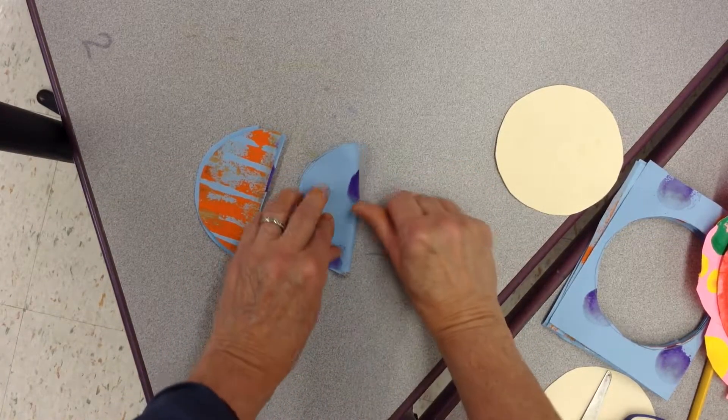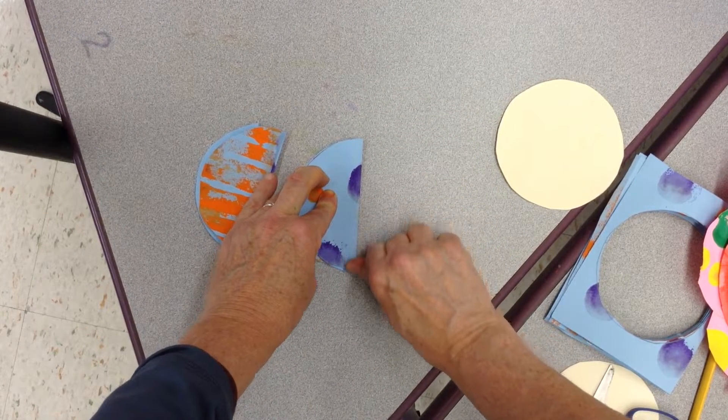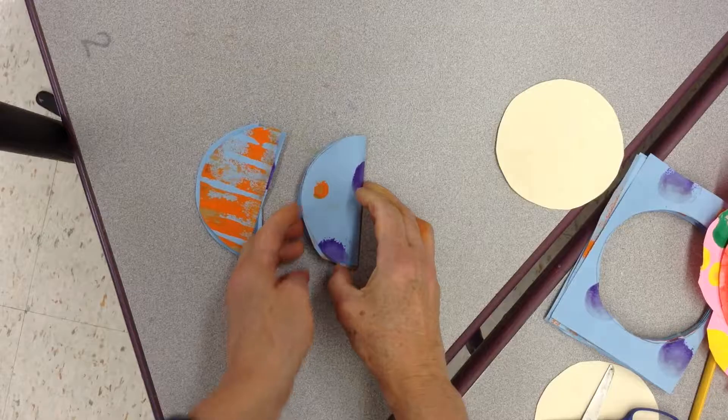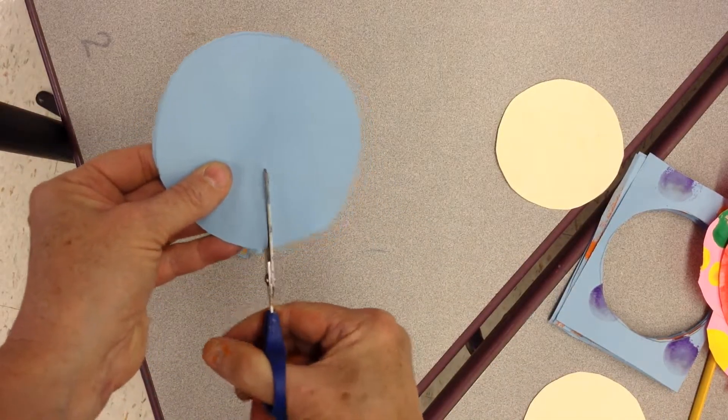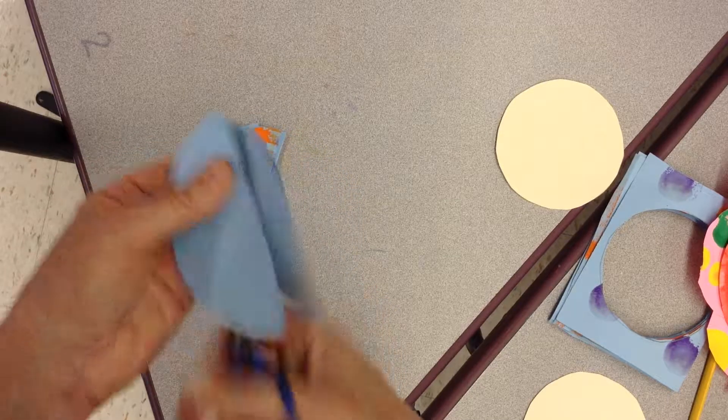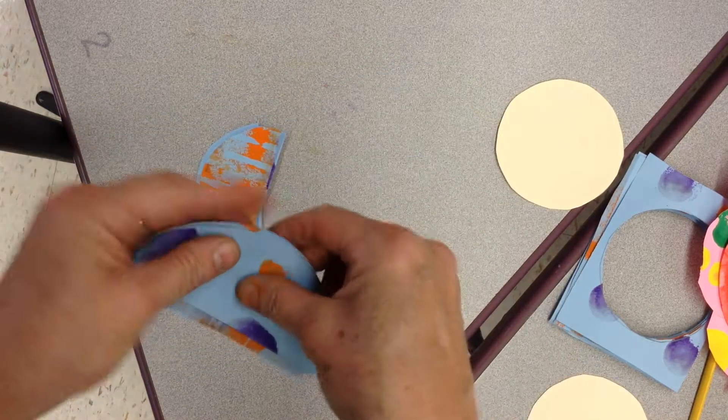Fold. I always like to use my finger to make a nice tight fold. Cut on the fold. And now you should have eight half circles or petals for your flower.